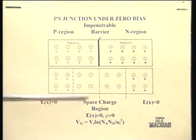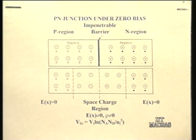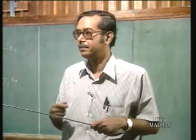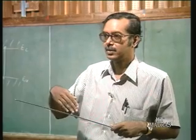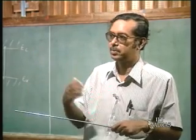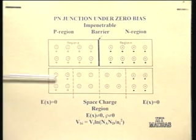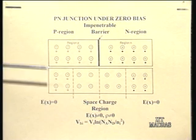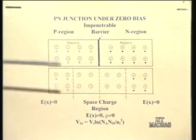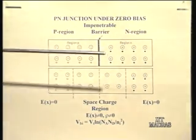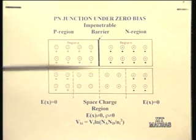As more electrons and holes diffuse, the electric field increases until another equilibrium is established with no further net diffusion. This gives rise to a built-in potential across the junction, given by a relation proportional to the thermal voltage and depending on doping concentration and intrinsic carrier concentration. For materials with a higher band gap, ni is smaller, so the built-in potential is larger — gallium arsenide has a higher built-in potential than silicon, and germanium has a lower one. At equilibrium you have three regions: the p bulk, the space charge region, and the n bulk.